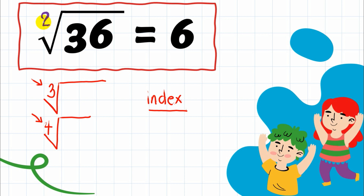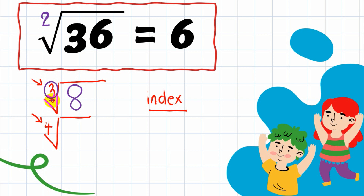Now, how do we read expressions with other indices? If the index is 3, we read it as the cube root — for example, the cube root of 8. If the index is 4, we read it as the fourth root — for example, the fourth root of 16.